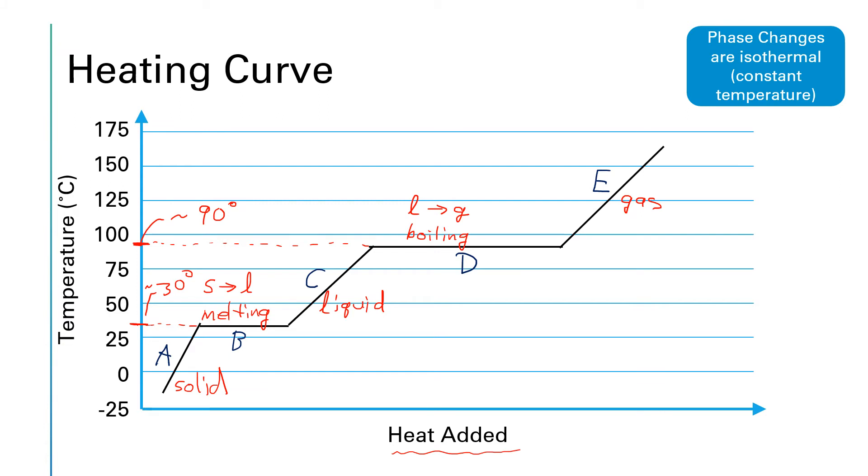So I just say A, B, C, D, E. Which of these line segments has one phase present? The correct answer would be A, C, and E. Or which of these line segments has two phases present? The correct answer would be B and D.